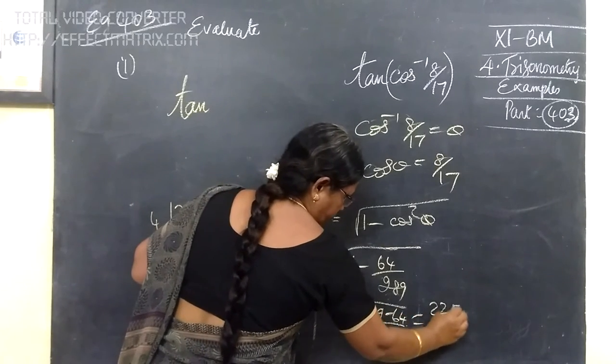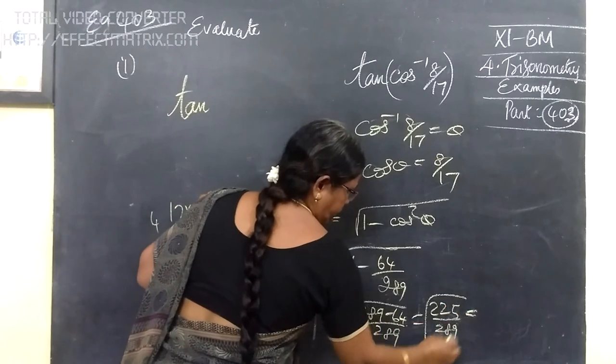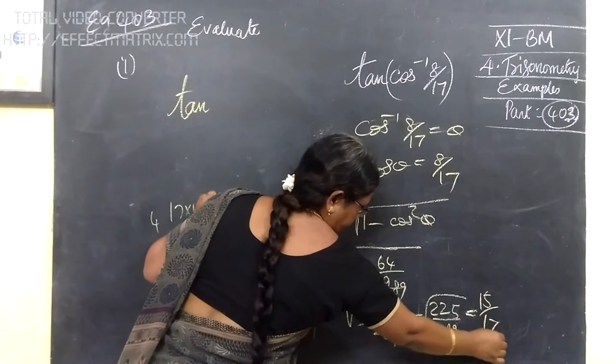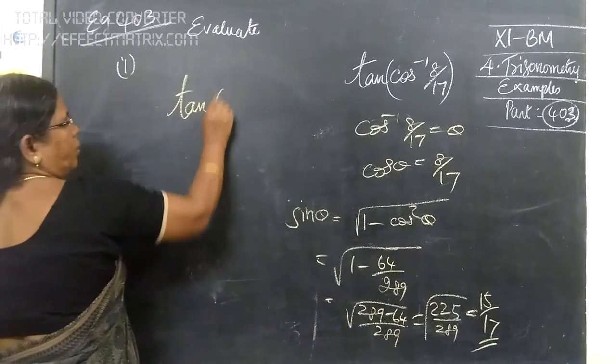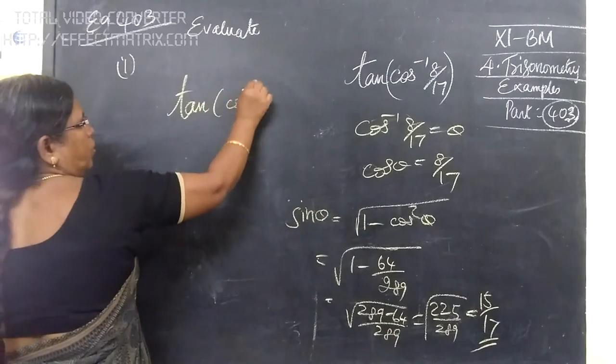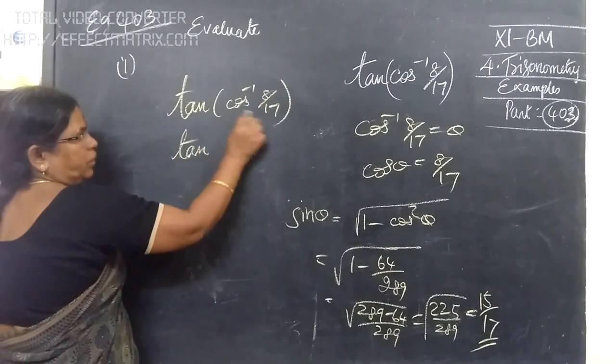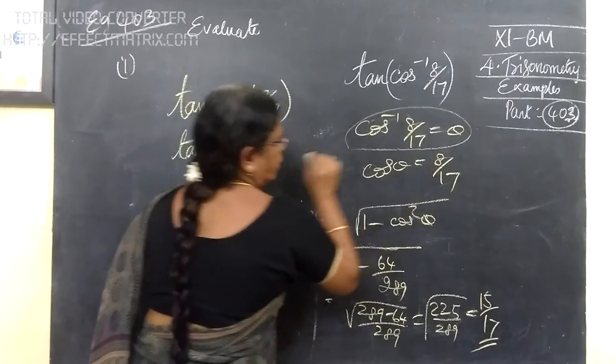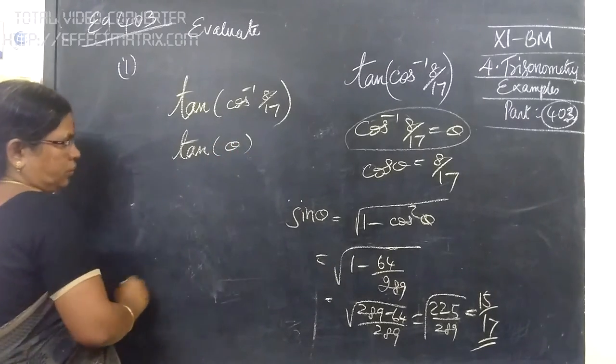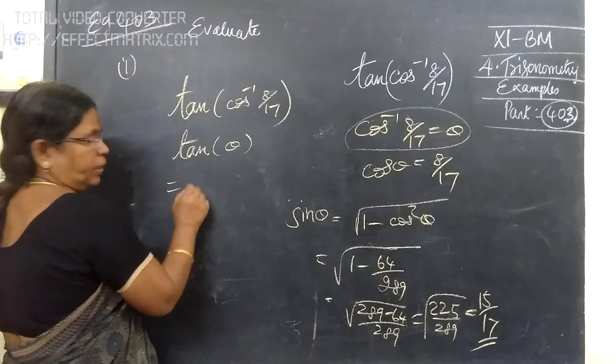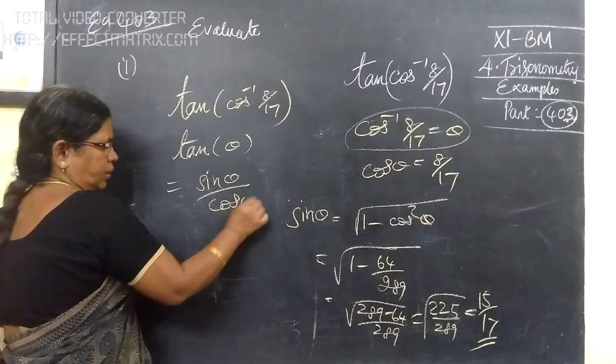So, 289. So, root of 289 minus 64. So, 225 by 289. So, equal to 15. So, equal to 15 by 17. So, equal to tan of cos⁻¹(8/13). Equal to tan of. Let this be theta. So, tan theta will be tan theta by cos theta.